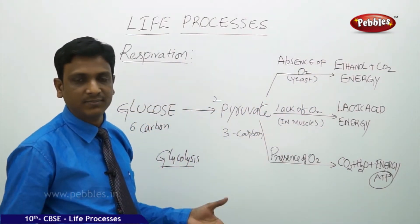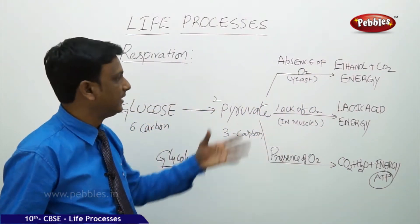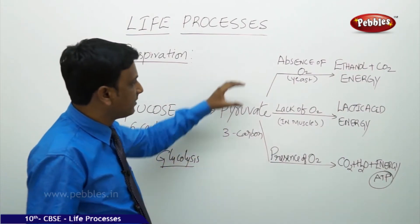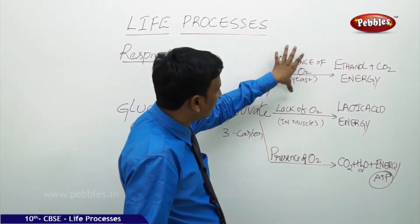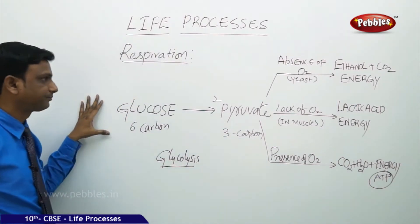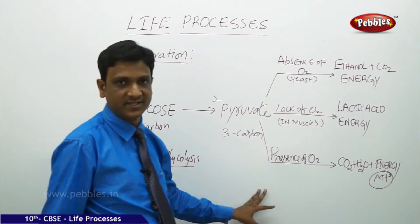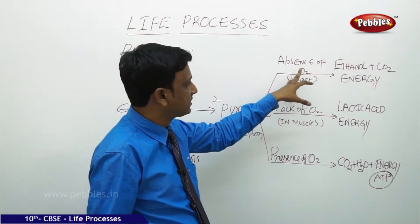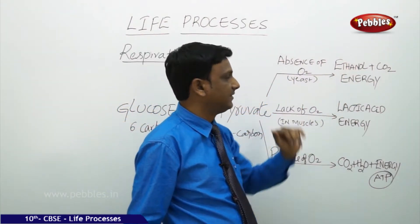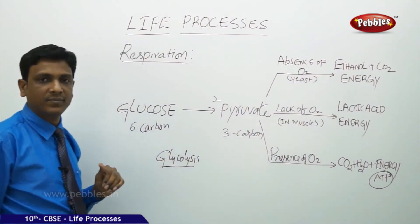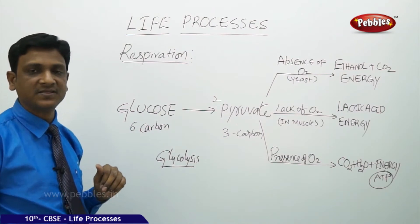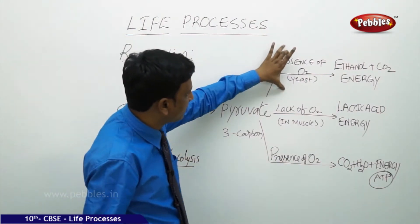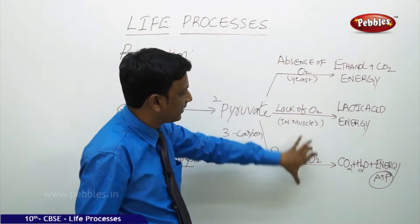The organism cannot completely utilize the pyruvate in anaerobic respiration. So anaerobic organisms get less energy from glucose compared to aerobic organisms. Along with the energy, some other material like ethanol is also produced. These are the key differences between anaerobic and aerobic respiration.